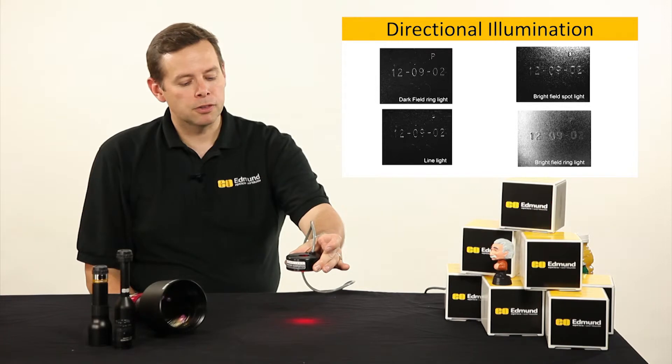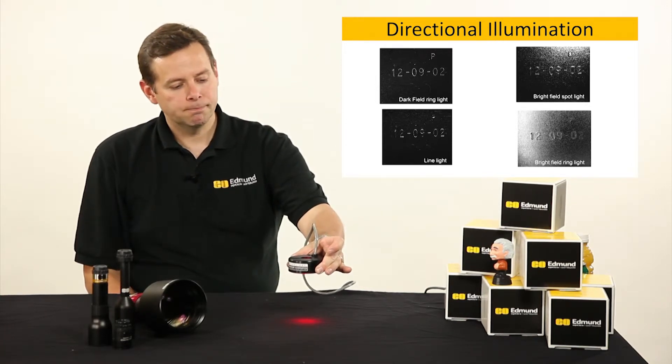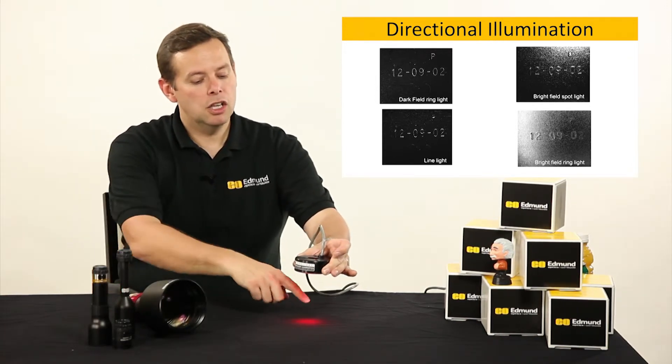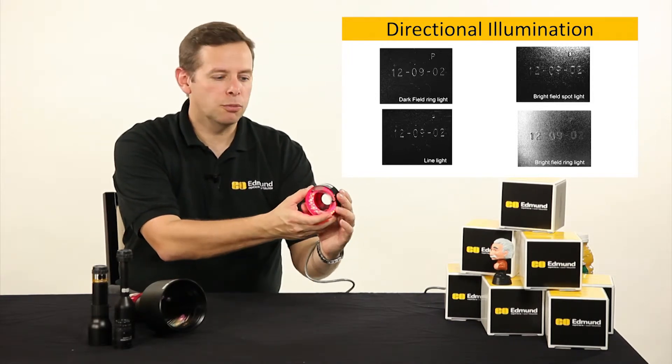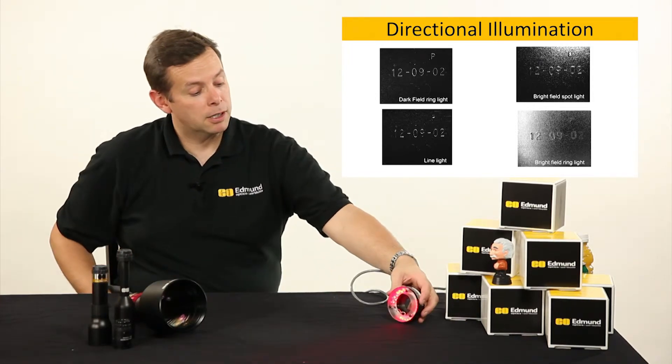So if we were to look down at a mirrored surface, as seen in the image above me, you would actually see the ring light here that would be coming up with the individual spots from the LEDs themselves. That could be good, that could be bad, depending on the application.